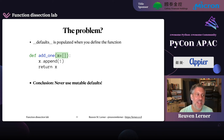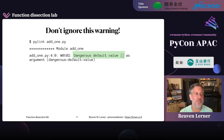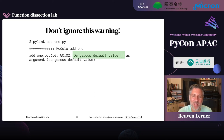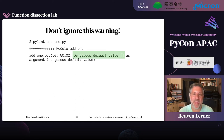If you run PyLint on this code, you'll see: 'Dangerous default value, empty list as an argument.' Don't use mutable defaults. Many modern Python editors run PyLint or something similar in the background. You should definitely pay attention to warnings of this sort, because otherwise you'll end up with really bad behavior.